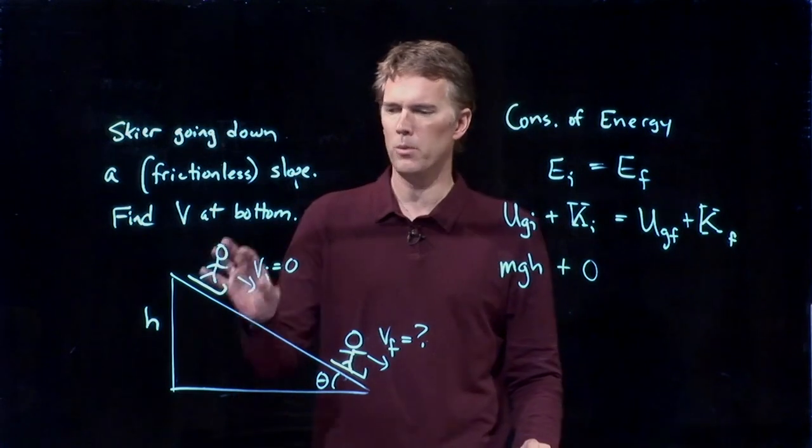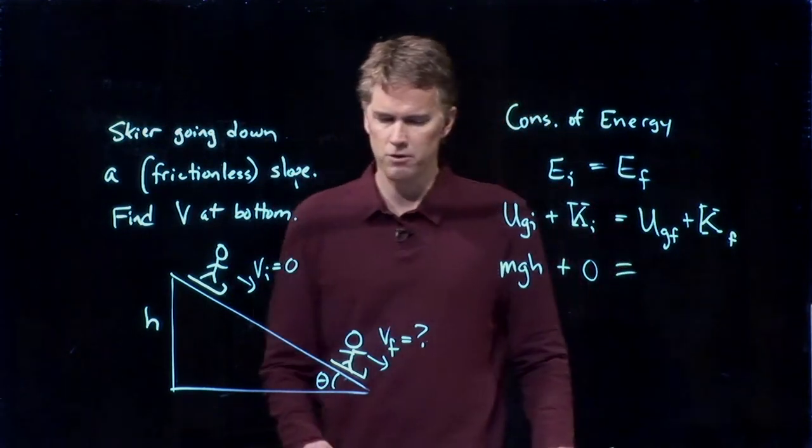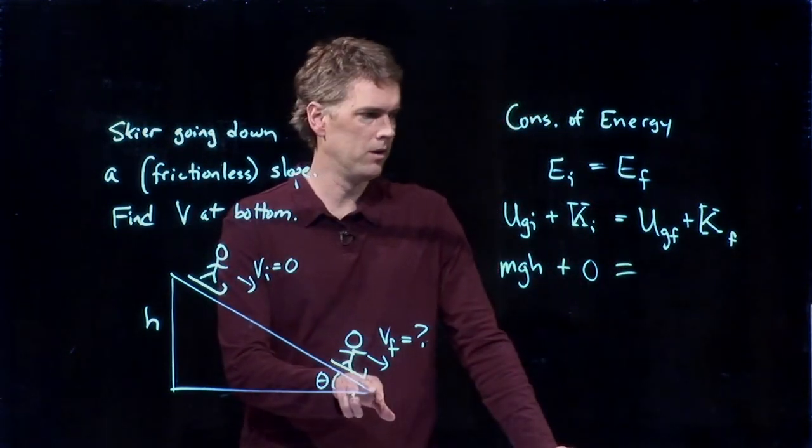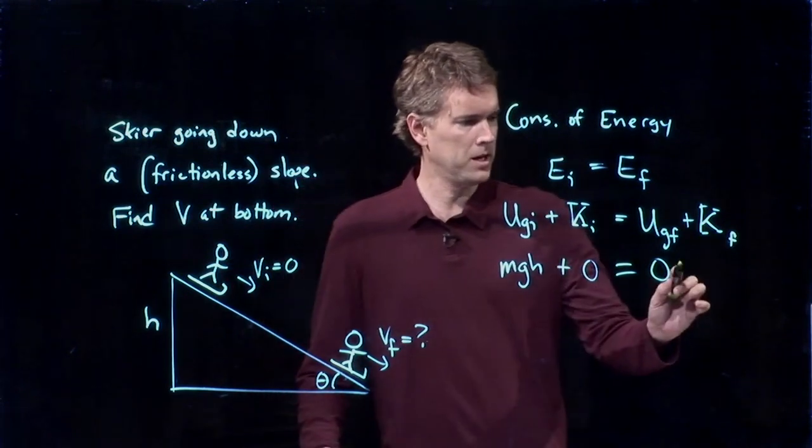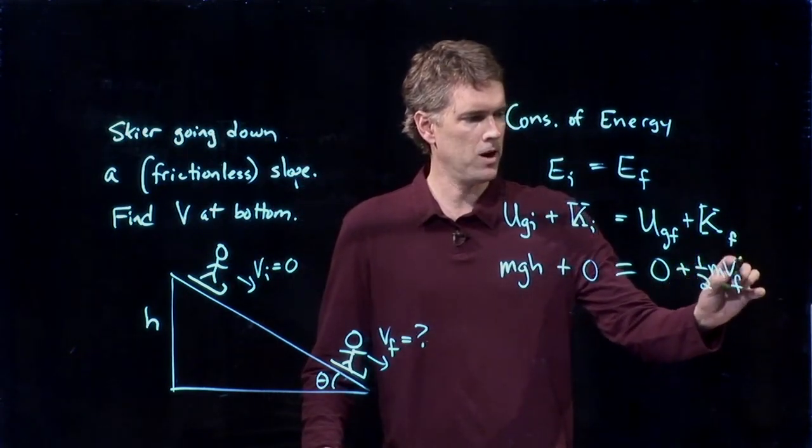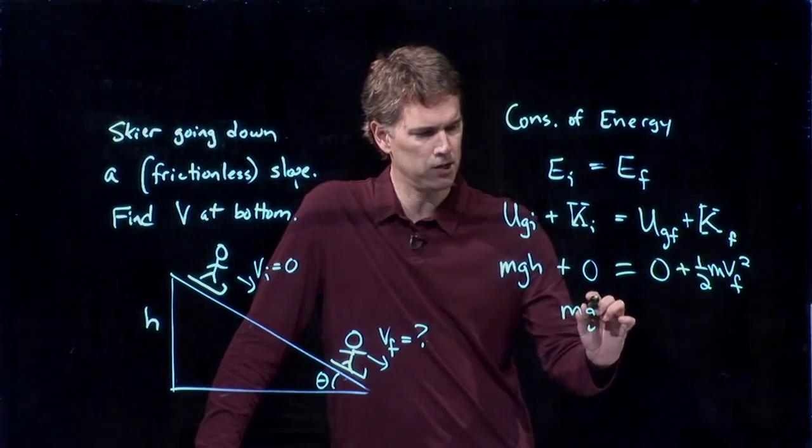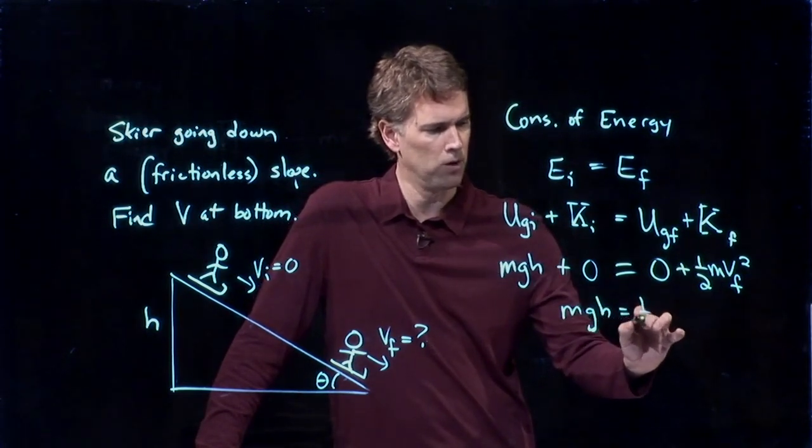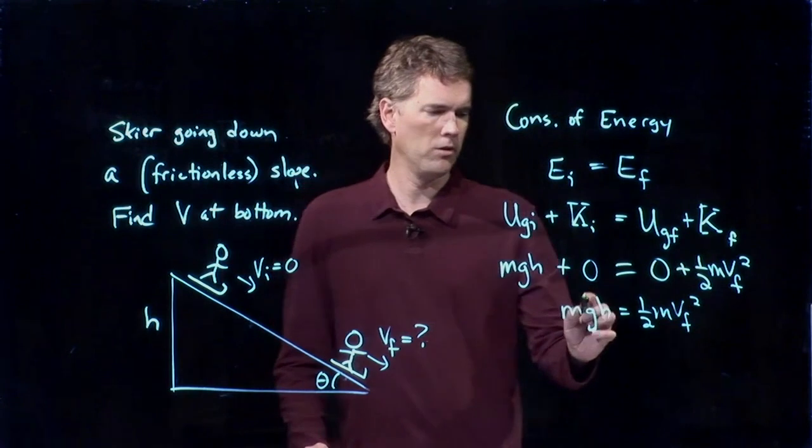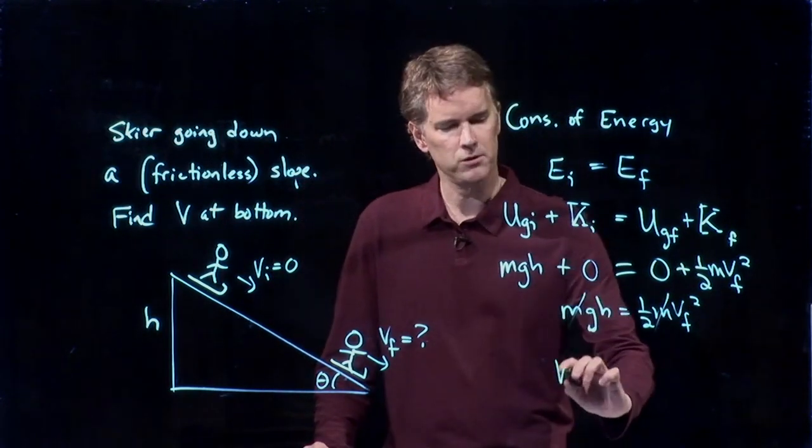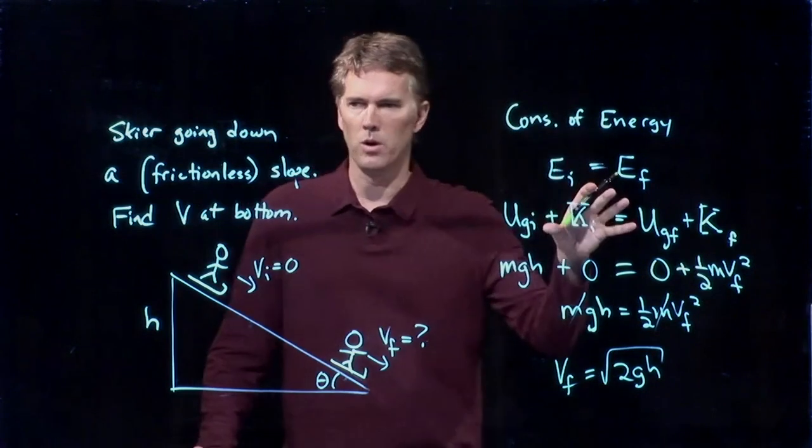Now gravitational, we said, was just how high are you above the surface of the Earth? If we start up here, if we start up at h, that just becomes mgh. Kinetic initial was one half mv squared, but we said that you're starting from rest up there. So that term is zero. Gravitational final is down here when you're at the bottom of the hill. And now you're at a height of zero. And so that term is zero. And you're moving at some speed. One half mvf squared is therefore your kinetic energy. And now look how simple this is. Mgh equals one half mvf squared. And you can solve this for vf. Cross out the m's, multiply by two, take the square root. And you get exactly what we had before, in a lot fewer steps.